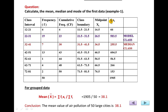For the mean we only require frequency and midpoint. Multiplying: 4 × 16.5 = 66; 19 × 26.5 = 503.5; 7 × 36.5, and so on for all classes. Adding all these products gives summation fi·xi = 1905. Dividing by total observations: 1905 ÷ 50 = 38.1. The mean is 38.1.